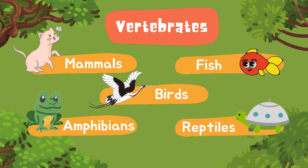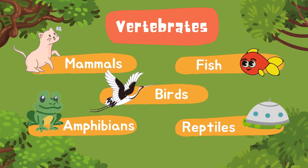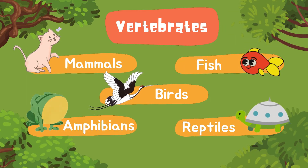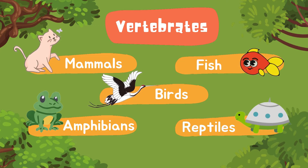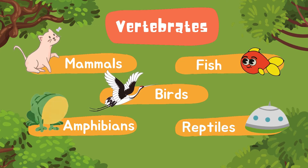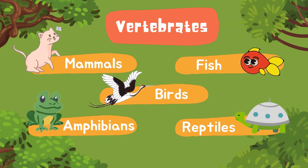Vertebrates are grouped into five: mammals, fish, birds, amphibians, and reptiles.